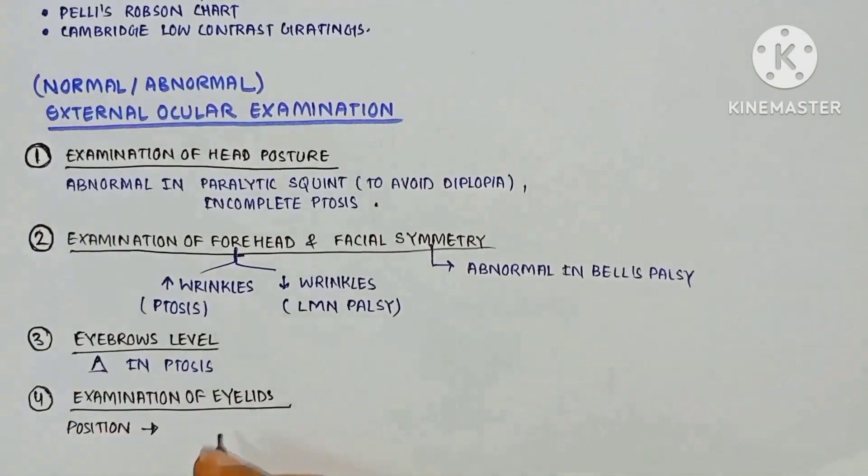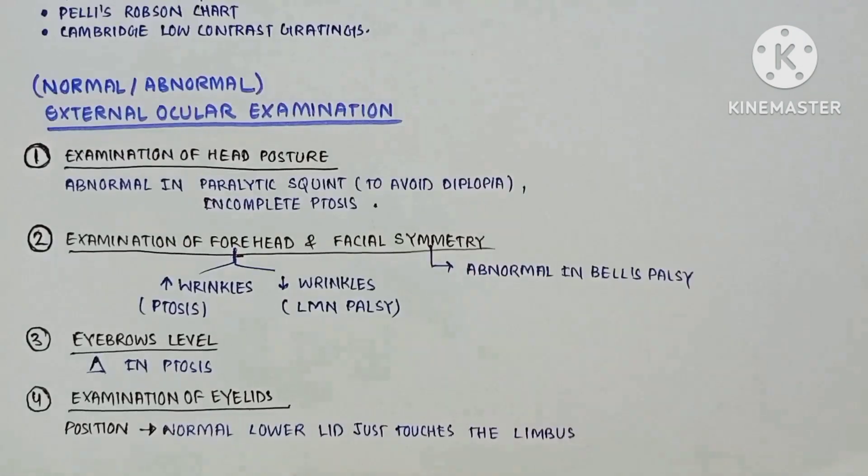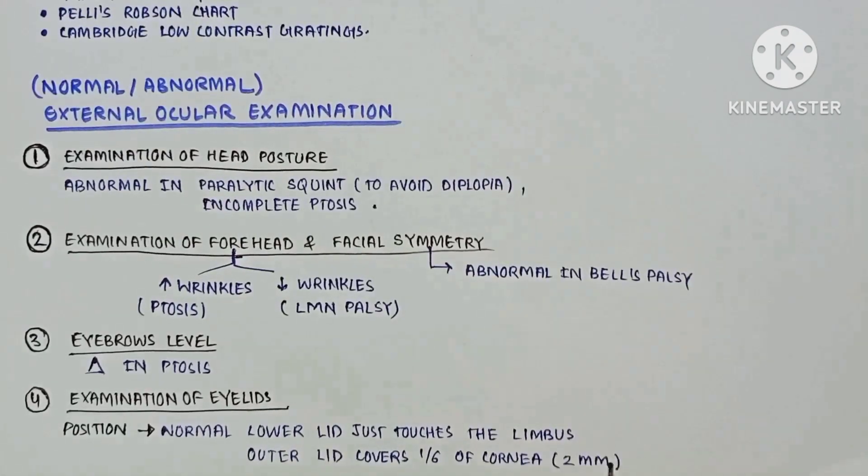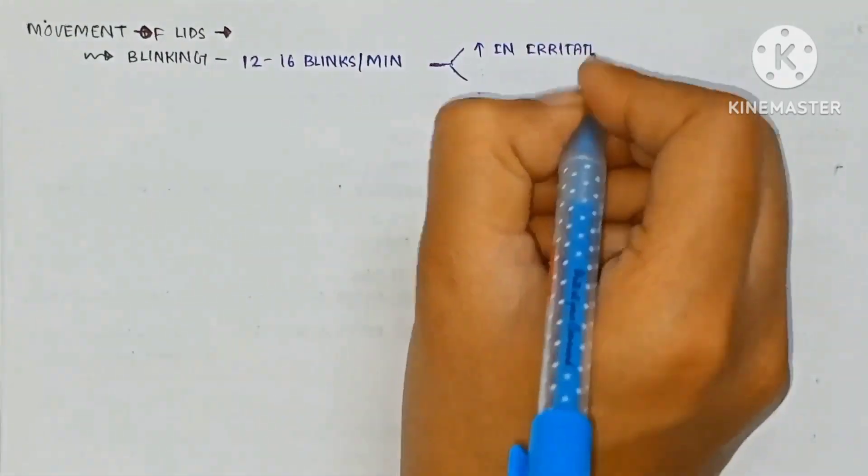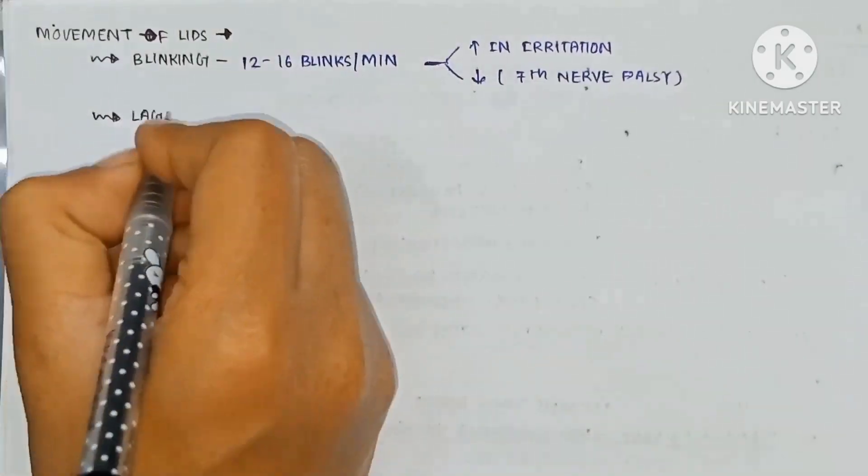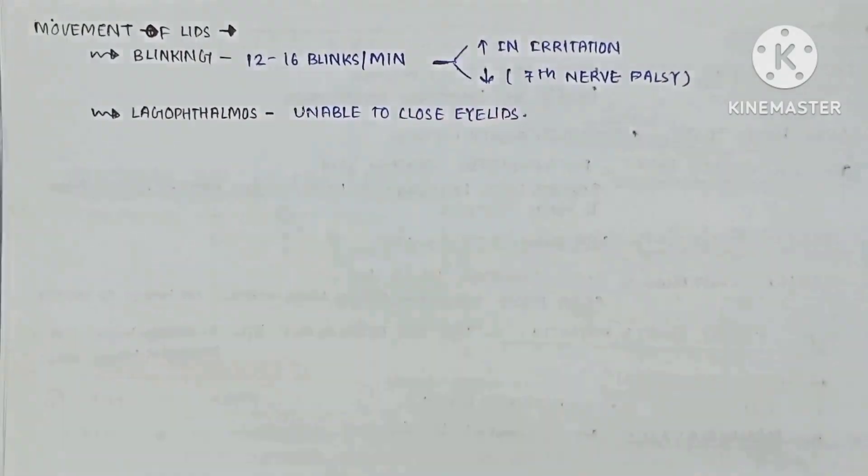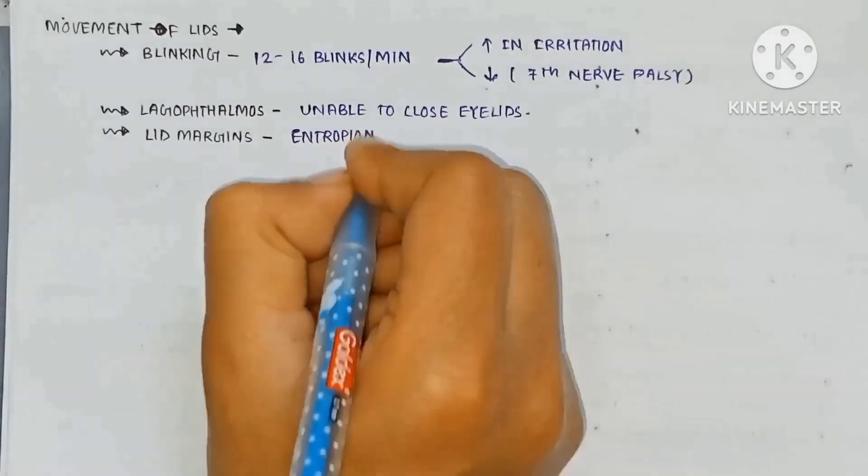Examination of the eyelid position: normal lower lid just touches the limbus and upper lid covers 1 by 6 of the cornea at 2 mm. The movement of the lid: blinking is 12 to 16 blinks per minute, normal. Increased in irritation, decreased in 7th nerve palsy. Lagophthalmos which is unable to close eye.